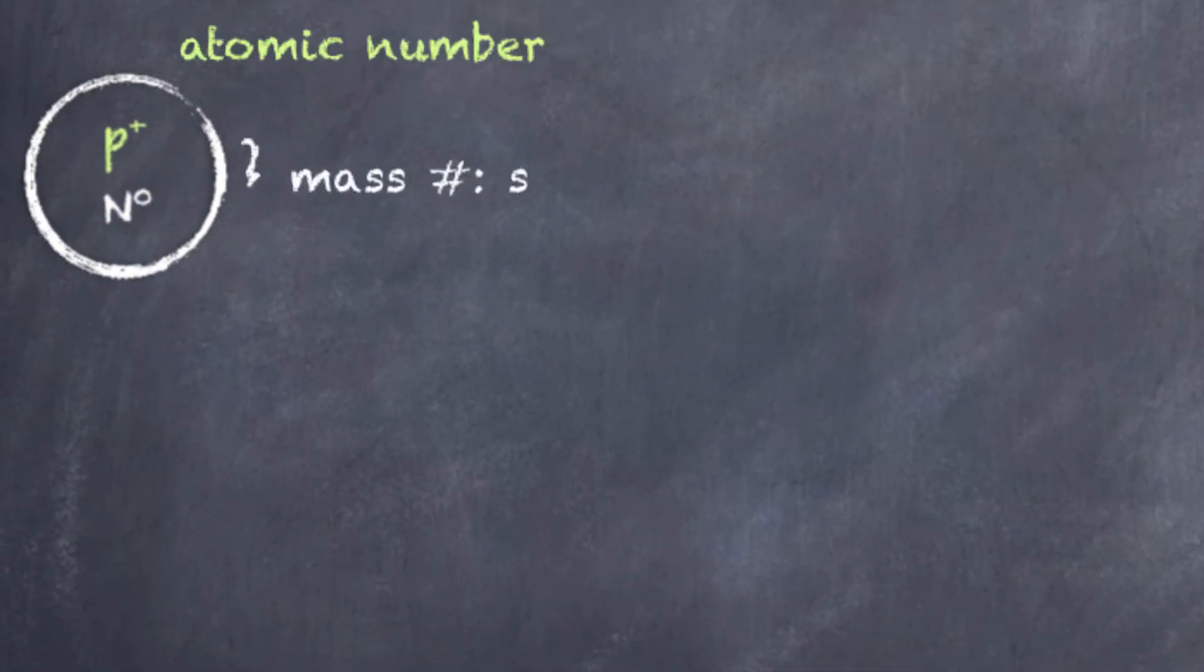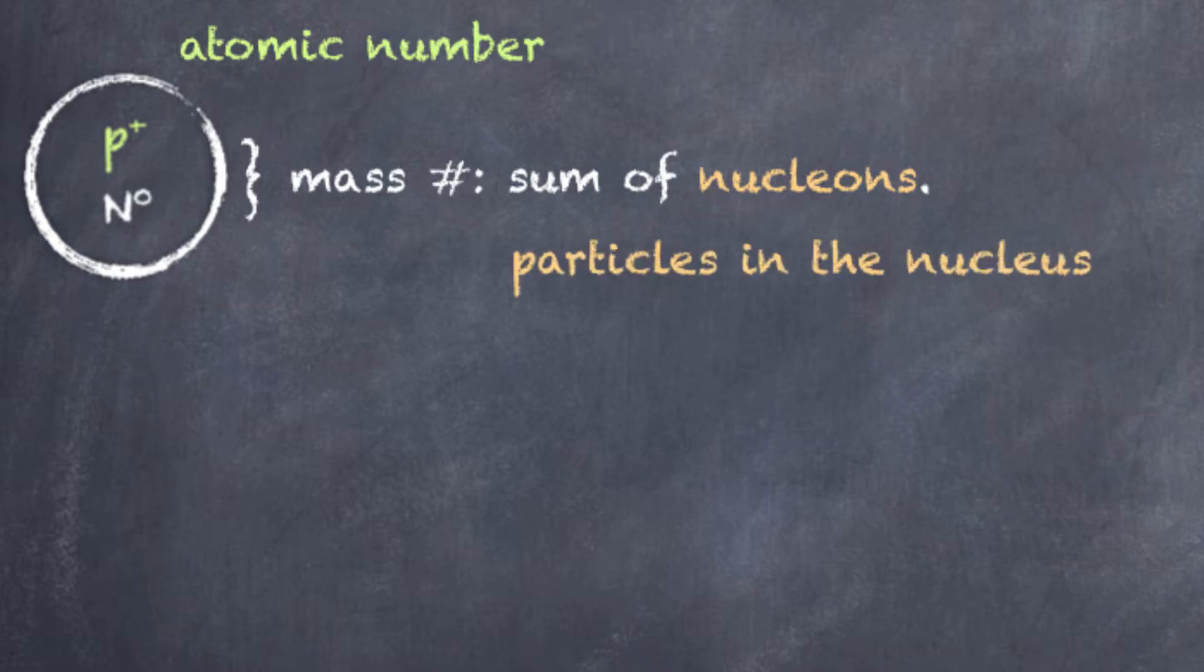If we take a look at the combination of protons and neutrons, which we classify as nucleons, those particles that are located in the nucleus, these help us arrive at the mass number. So, the total number of protons and neutrons, the total number of nucleons, gives rise to the mass number.